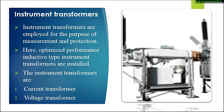Instrument transformers are employed for the purpose of measurement, support, and protection. The orange highlighted area is where instrument transformers are located in the actual HIS module. Optimized performance inductive type instrument transformers are installed here. The instrument transformers include current transformers, used for current measurement, and voltage transformers, used for voltage measurement.